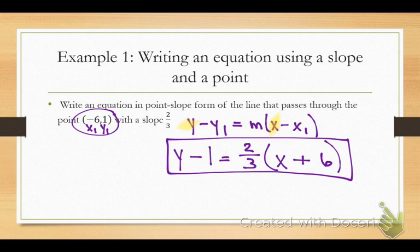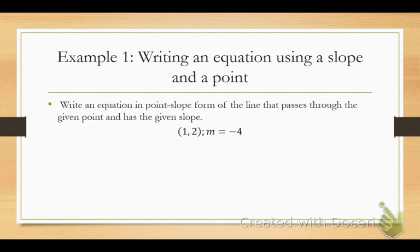All I'm doing in point-slope form is plugging in the numbers, the values, where they go in the formula, and I only need one point to do it. So now I want you to do one.